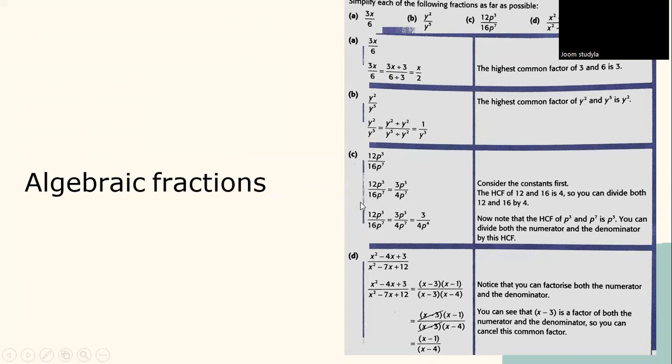This is another example. I'll just explain to you just a few examples. 3x over 6. How to do this is, the highest common factors of 3 and 6 is 3. In this case, you have to divide by 3 the numerator and the denominator. You have to divide by 3, and then you get the value of x over 2.